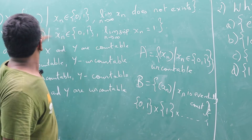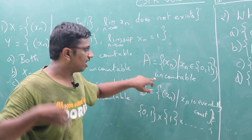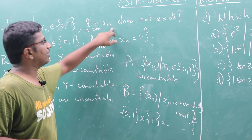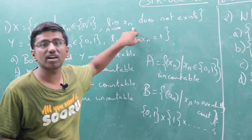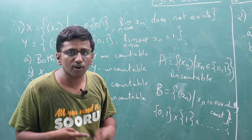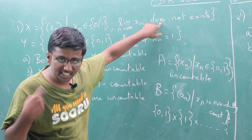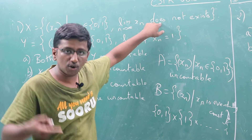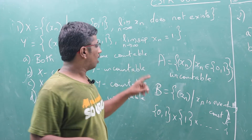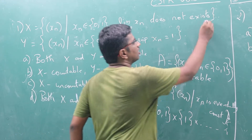We know the parent set is uncountable. This complement is countable. Then the xn set must be uncountable. Because if the countable set union were countable, and if it were countable, it would be countable — which is false. This set is uncountable, therefore the xn set is uncountable.